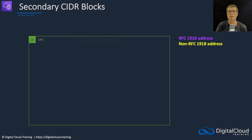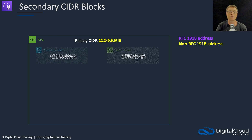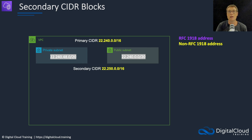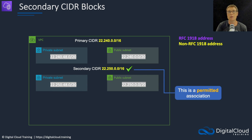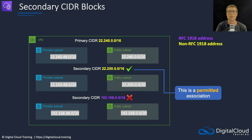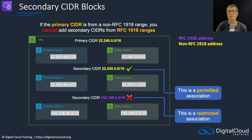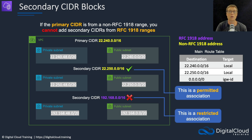Let's look at some examples of permitted and restricted associations. In this VPC, the primary CIDR is a non-RFC 1918 address - a publicly routable IP address. We have subnets within that CIDR block range. For the secondary CIDR block, if we add another non-RFC 1918 address, that is a permitted association. However, if we try to add a CIDR block using an RFC 1918 private address space, that is a restricted association. So if the primary CIDR is from a non-RFC 1918 range, you cannot add secondary CIDRs from RFC 1918 ranges. The route table will have a local route added for each CIDR block you add to your VPC.